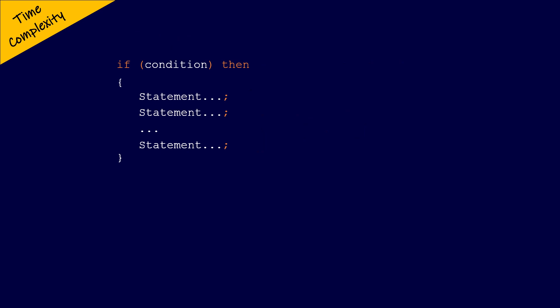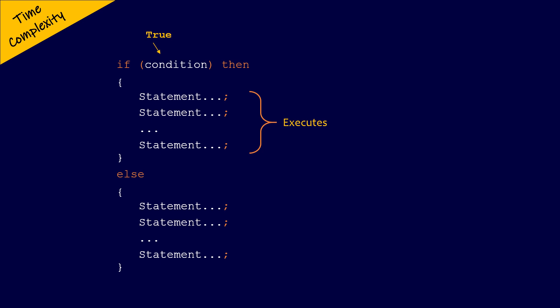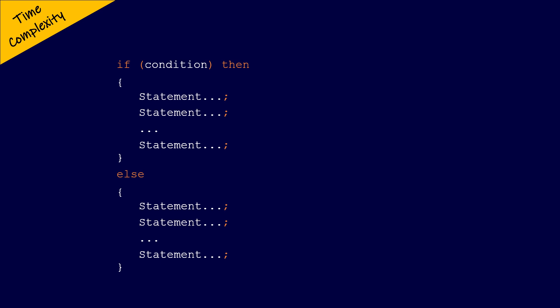Let us look at the time complexity of the if-else statement. Here we have an if-else statement, and if the condition is true, then the statement or statements inside the if structure are executed. And if the condition is false, then the statement or statements inside the else structure will be executed. Since this is an if-else structure, both statements inside the if and else structure cannot execute at the same time. Either the statements inside the if structure will execute, or the statements inside the else structure will execute.